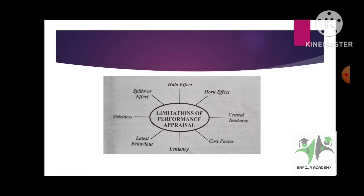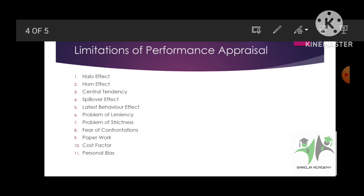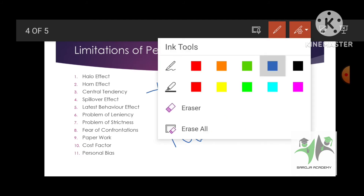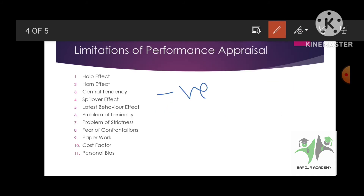This is the chart I have given — we'll start one by one. First is halo effect. Halo effect means you are considering one positive factor, and based on that one positive factor you are evaluating that person. So if a person is punctual, you are giving him high scores on the basis of his punctuality alone — considering only one positive factor.